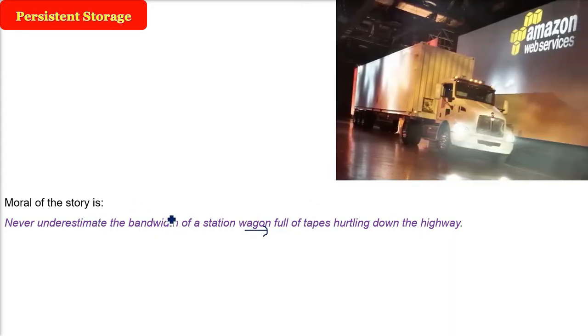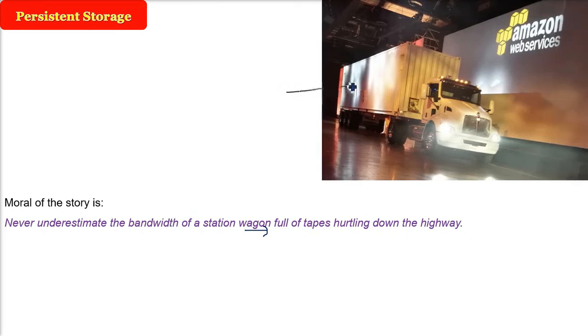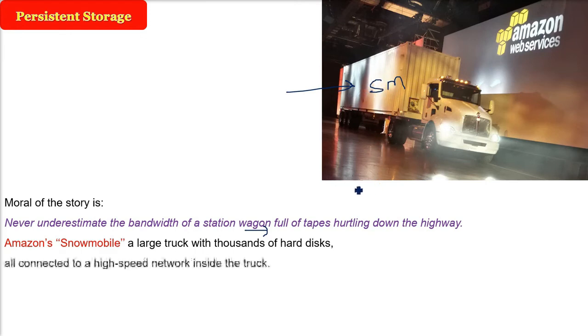If you have a truck full of data, that is much more than any transfer rates. This is the example I am showing of Amazon Snowmobile. This is a large truck. It has thousands of hard disks. That is the persistent storage. All are connected through high-speed network inside a truck.